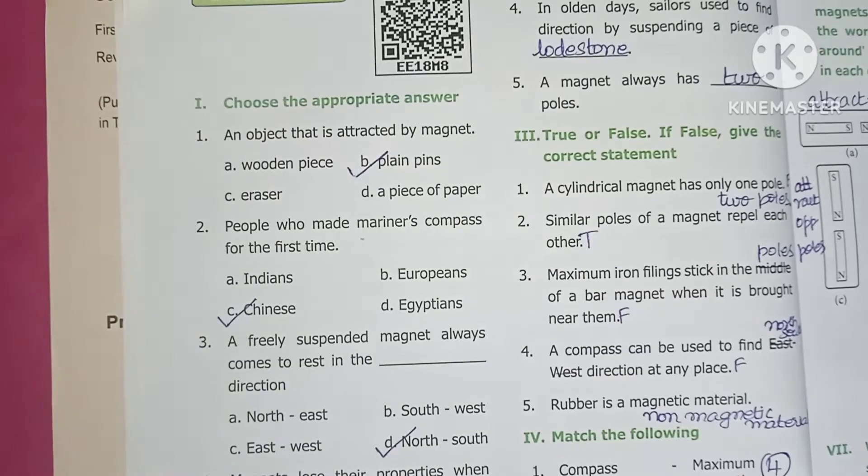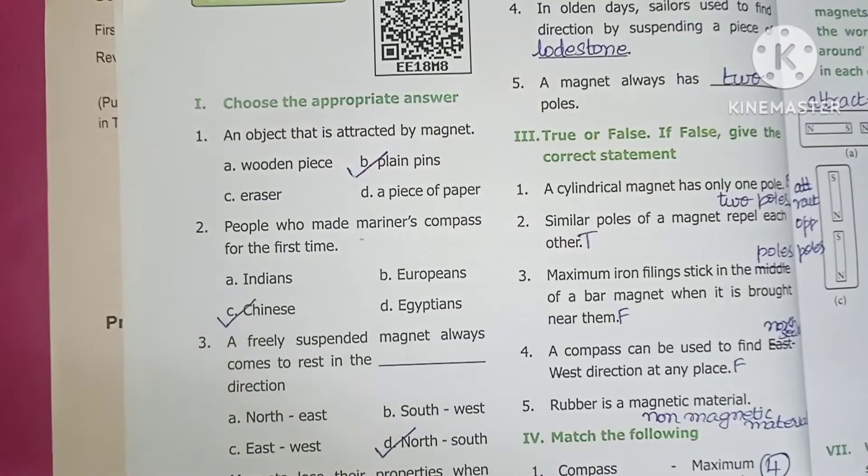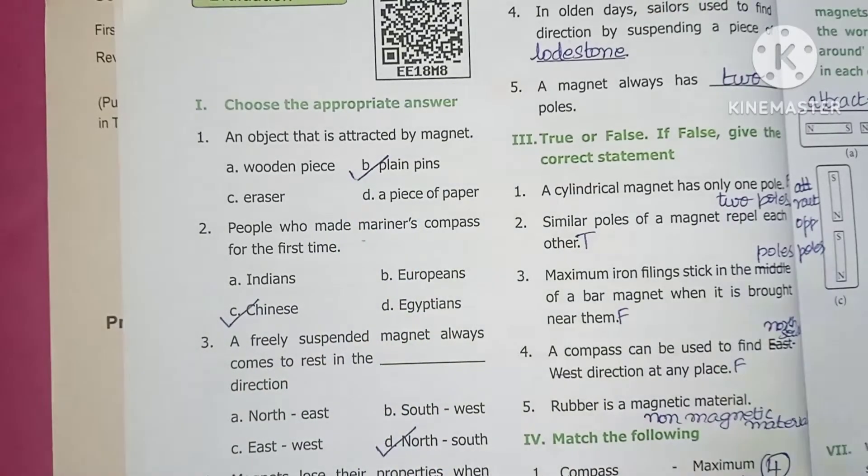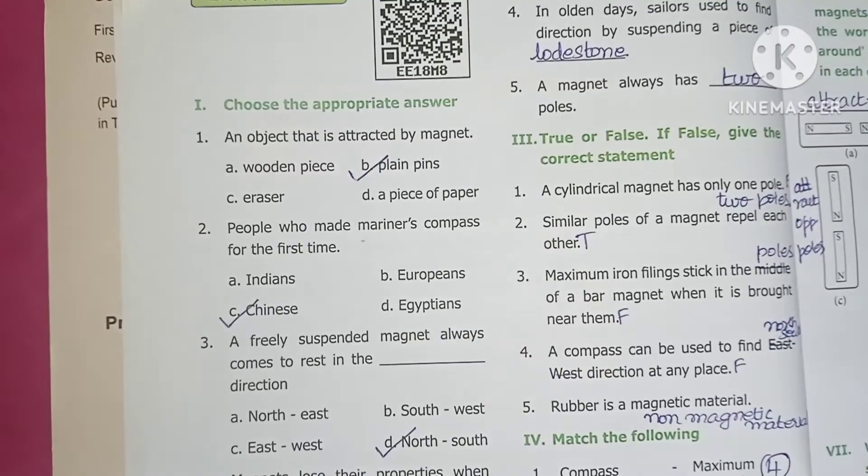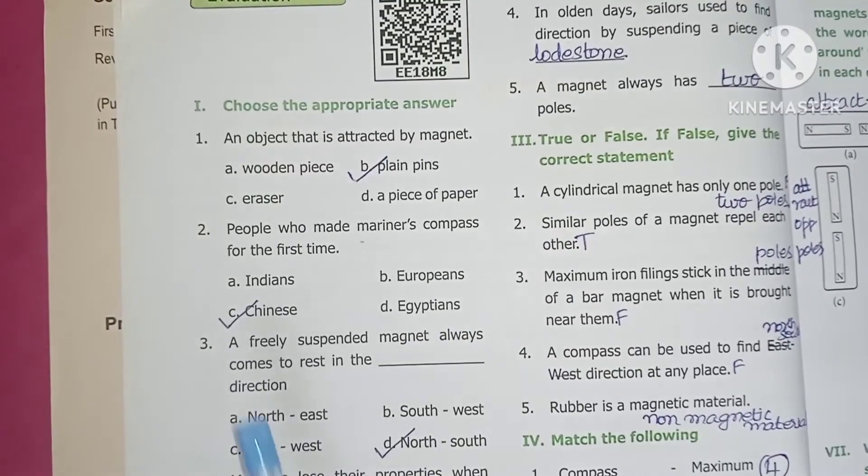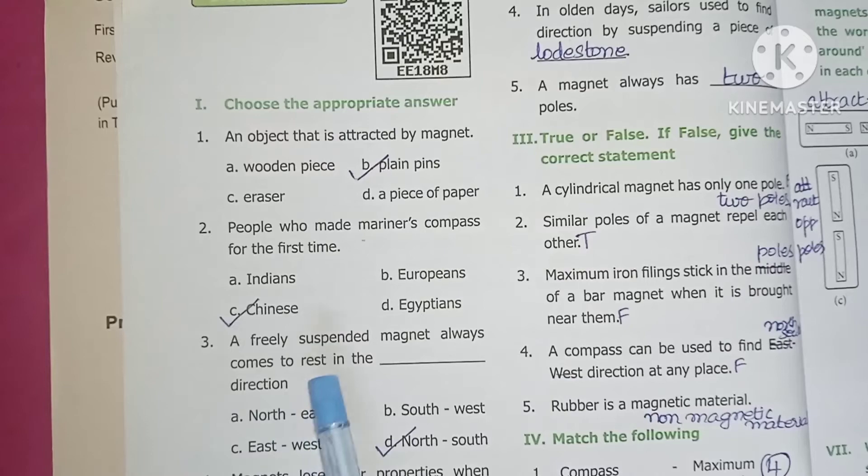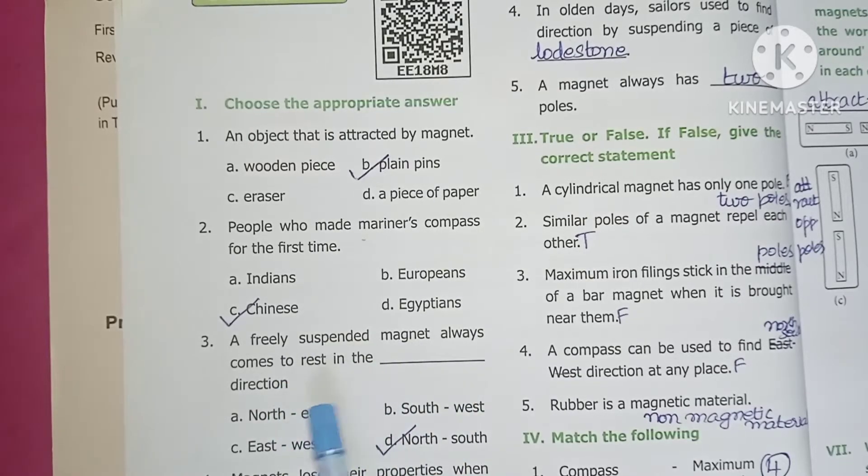An object that is attracted by magnet - the answer is plain pins. Next, people who made mariners compass for the first time - the answer is Chinese. A freely suspended magnet always comes to rest in the north-south direction.